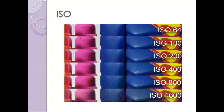To demonstrate: an ISO of 64 has a sharper image than an ISO of 1600. As you can see, the ISO of 1600 has more noise, or is grainier, than the lower ISO number.